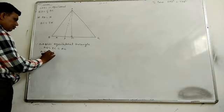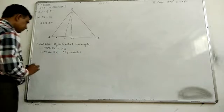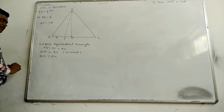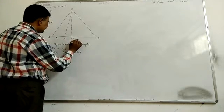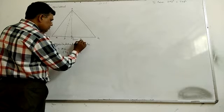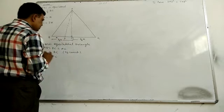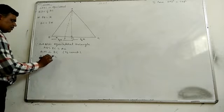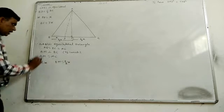AM is perpendicular to BC. Therefore BM is equal to MC, meaning M is the midpoint of BC. So BM equals BC divided by 2, which is 3 by 2 x, where BC equals 3x. This complete value is also 3 by 2 x.